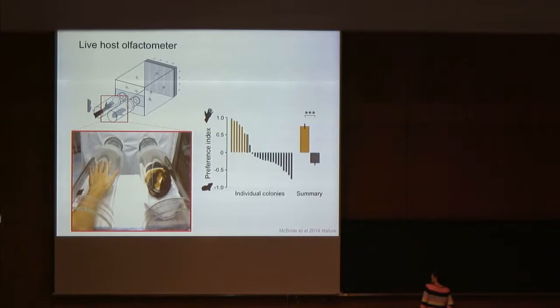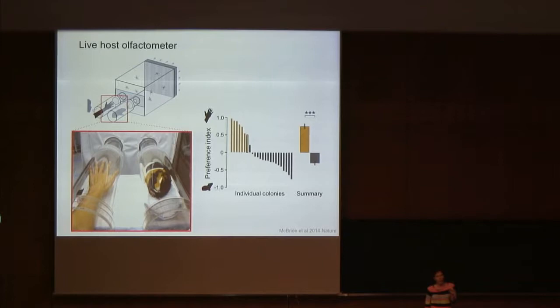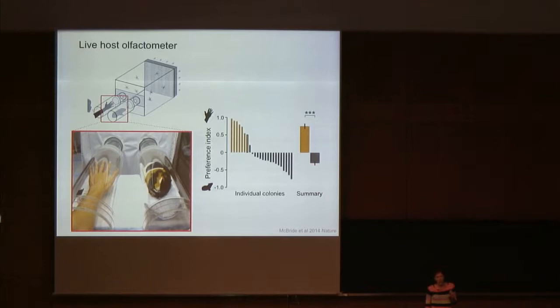We also conducted an assay using sections of nylon pantyhose worn on a human arm or a guinea pig torso for 24 hours to pick up host odor. We can then add controlled amounts of carbon dioxide to that host-specific odor, unlike the live host assay where we can't control how much CO₂ each host emits. When we controlled for that, we saw the same difference in preference — confirming that this preference is based on a specific response to species-specific host cues and not to a general difference such as the amount of carbon dioxide in our breath.